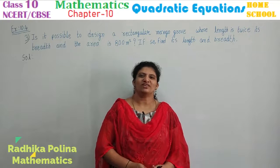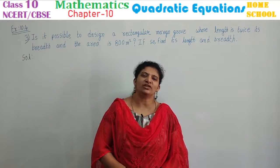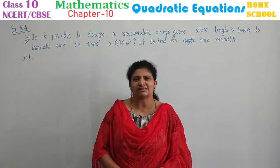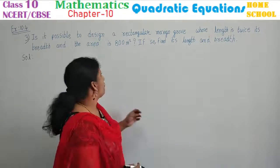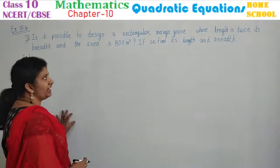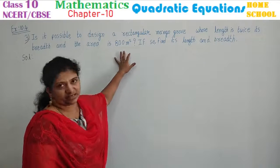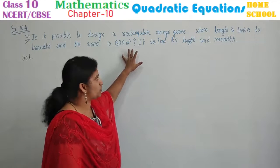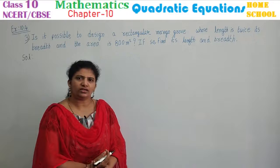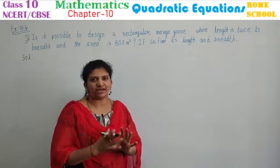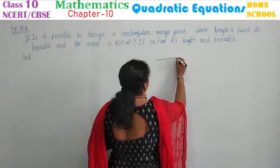Hi, hello! Welcome to Home School. This year, Class 10 Mathematics, NCERT or CBSE board. We are in Chapter 10, Quadratic Equations — last session — and this is Exercise 10.4, third problem. Is it possible to design a rectangular mango grove whose length is twice its breadth and the area is 800 square meters? A mango grove is a group of plants arranged in the shape of a rectangle. Let us draw a rectangle here.